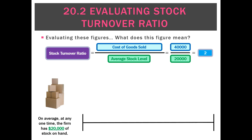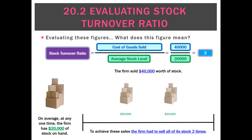What it means is on average at any time during this period we had stock on hand of $20,000. That was our average stock — on average at any point during the period that's how much stock we had. What does the 2 mean? Well our cost of goods sold was $40,000 during the period. So what that means is we turned over our stock twice.